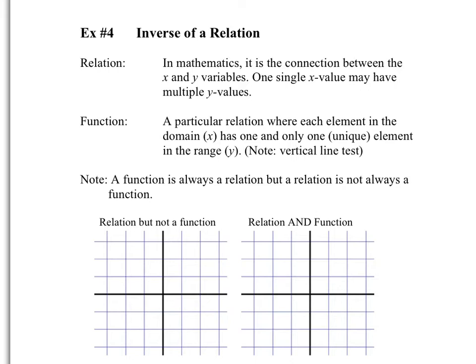First, let's make sure we understand the difference between a relation and a function. A relation is basically a relationship between x and y — there are no restrictions on it. A function, however, is a particular relation where each value of x has only one value of y.